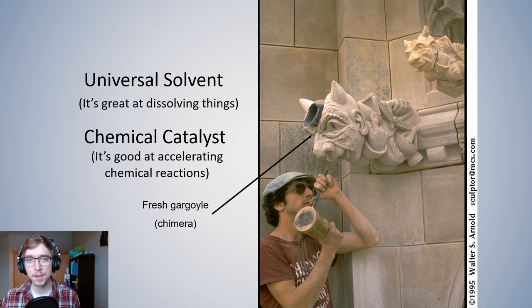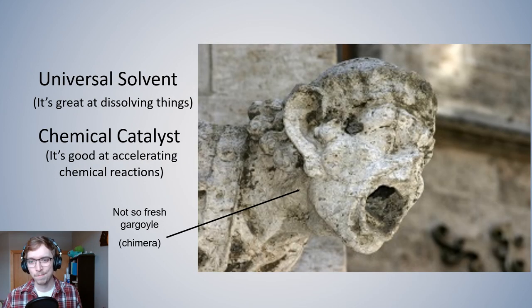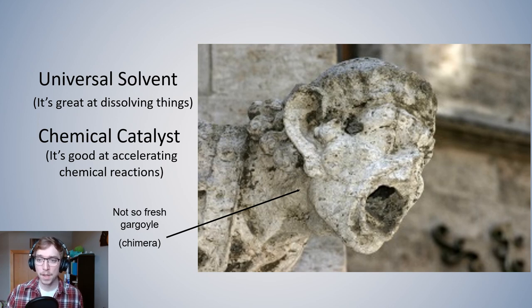Now, not as pertinent to consider given that we're in a meteorology and weather class: water is a universal solvent. It's great at dissolving things, and it's a chemical catalyst, which means it's good at accelerating chemical reactions. That's how we break down materials on the earth so much more efficiently. If we were to look at this fresh gargoyle or chimera or whatever you want to call it here, we see it looking nice, pristine, all these sharp edges. But if we were to look at it maybe a few years later, it would look something like this. Notice how dissolved this material is, how you kind of lose all definition and features. Water is great at dissolving things because of all of these properties.